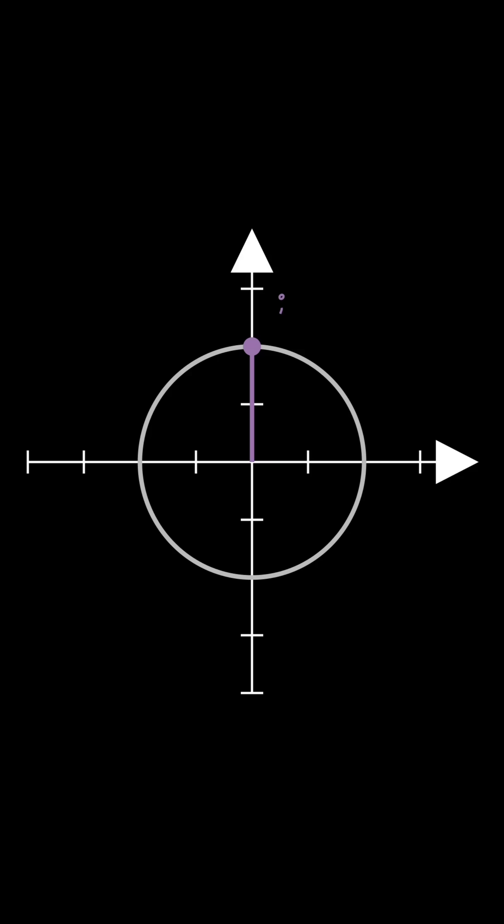We can see our point i has created an angle of pi over 2 with the x-axis. Plugging this into Euler's formula,